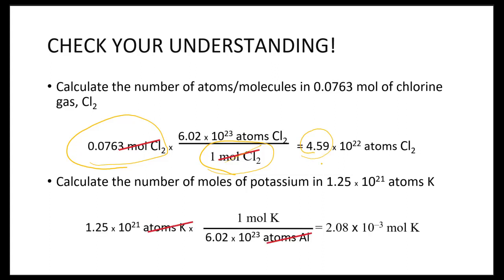What about for the second one? Hopefully you started with your atoms of potassium that our problem gave us, so I have to have my atoms on the bottom and my 1 mole on top. And if you plugged it into your calculator correctly, and I finished with 3 significant figures just like this, you could also put it in decimal form. It would be 0.00208 moles of potassium. That's still 3 sig figs.